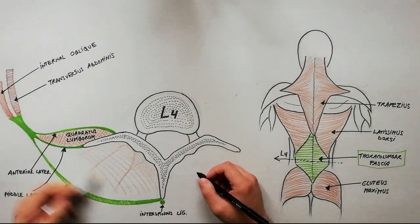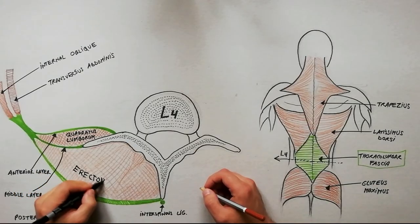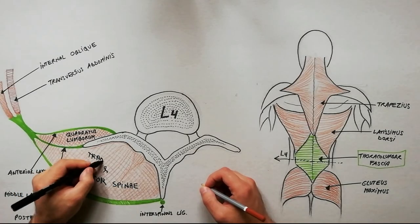Enclosed between the middle and posterior layers are the erector spinae muscles and the transversus spinalis muscles.